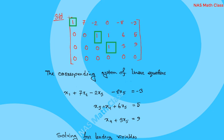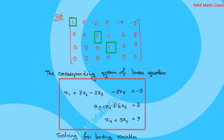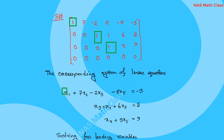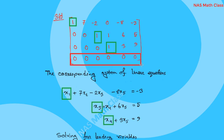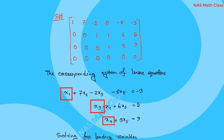This is the leading variable with leading 1. The leading 1 position corresponds to variables x1, x3, and x4. So the leading variables in this system of linear equations are x1, x3, and x4.